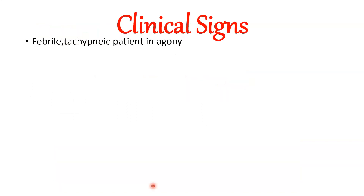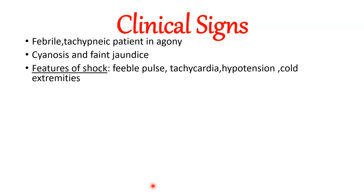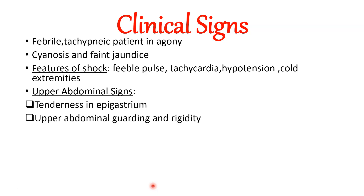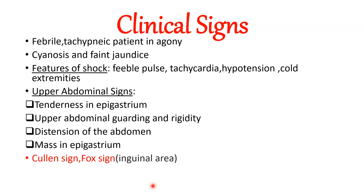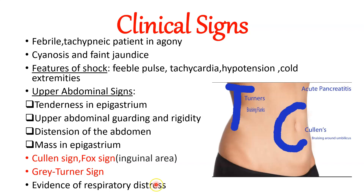On examination the patient may be febrile with signs of shock like hypotension, cold extremities, and feeble pulse. On abdominal examination there is tenderness in the epigastrium along with upper abdominal guarding and rigidity. The abdomen may be distended, and you may see signs of retroperitoneal bleed: Cullen's sign is bruising around the umbilicus, Turner's sign is bruising along the flanks, and Fox's sign is bruising over the inguinal area. Also look for any evidence of respiratory distress.